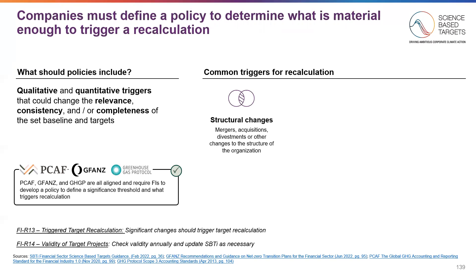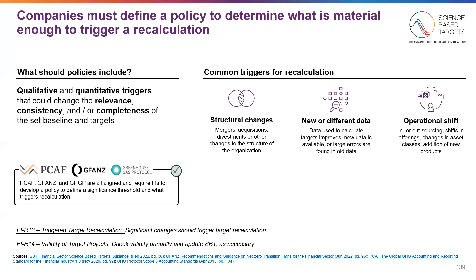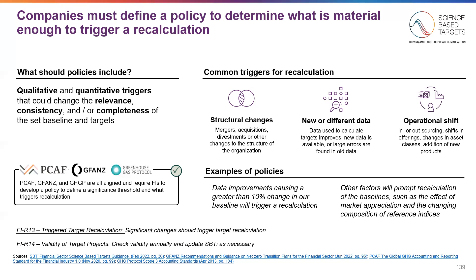There are three common triggers for recalculation. The first are structural changes, such as mergers, acquisitions, or divestments that change the structure of the organization. Additionally, there could be significantly new data used to calculate targets. Alternatively, there could be a large operational shift that impacts the baseline or target, such as choosing to insource versus outsource, change offerings, change asset classes, or more. It's important for each company to come up with its own recalculation policy.